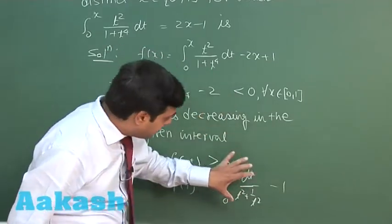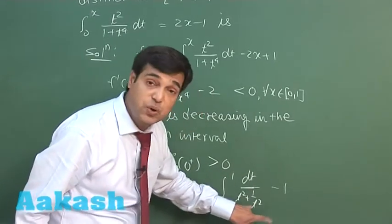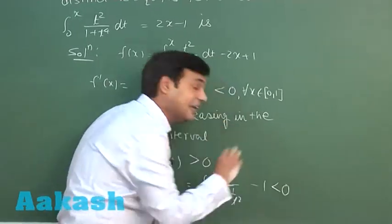We can clearly see the term integral 0 to 1 of dt upon t square plus 1 by t square minus 1 is coming to be negative.